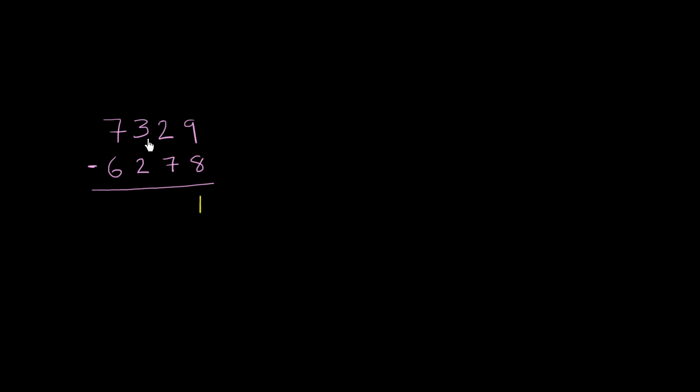To understand what we're doing, let's rewrite both of these numbers. So 7,329 we can rewrite as being equal to 7,000 plus 300 (the 7 in the thousands place is 7,000, the 3 in the hundreds place is 300), plus 20 (the 2 in the tens place is 2 tens or 20), and then the 9 in the ones place is just going to be 9. So this is another way of representing 7,329.